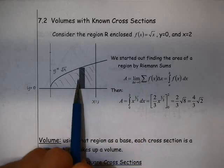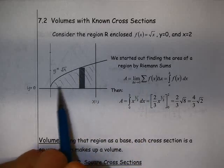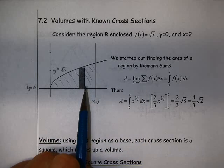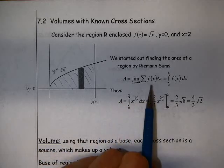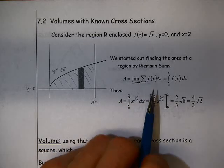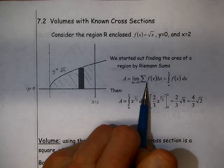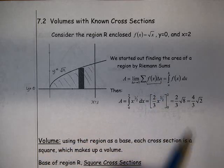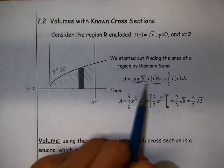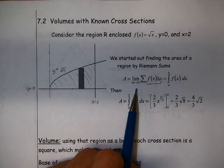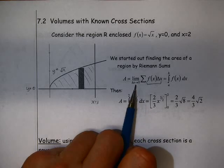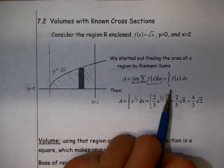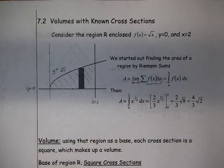We took this area, split it up into a bunch of rectangles, and then summed those up. This is the area of an individual rectangle, and this is the summation of all those rectangles. Then we take the limit as delta x approaches 0, or as the number of rectangles approaches infinity, and that's where we get the definite integral from.